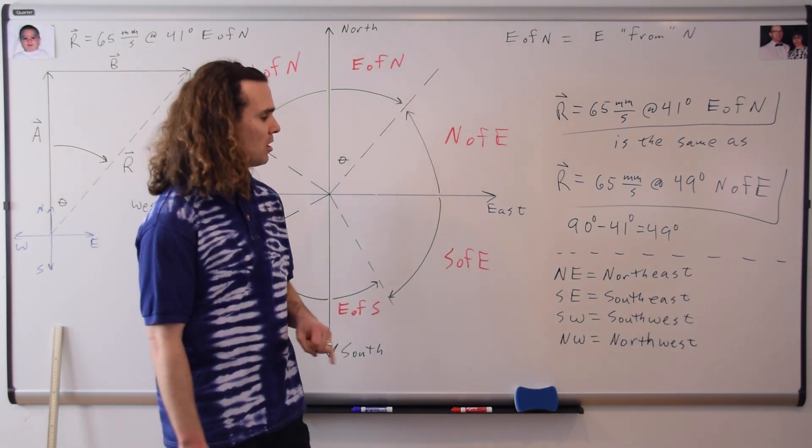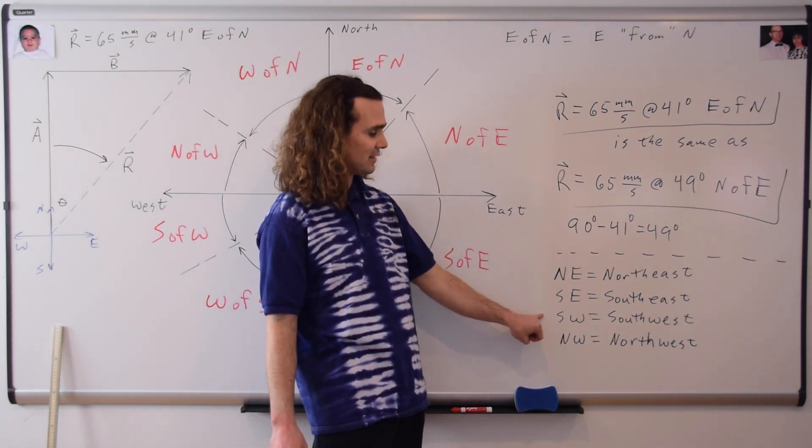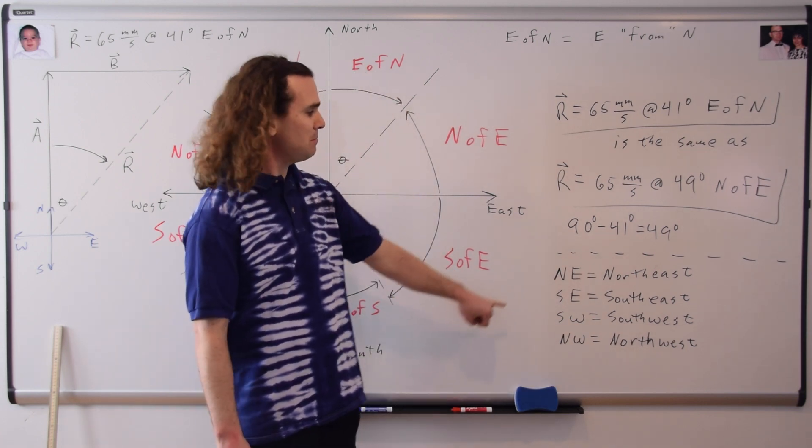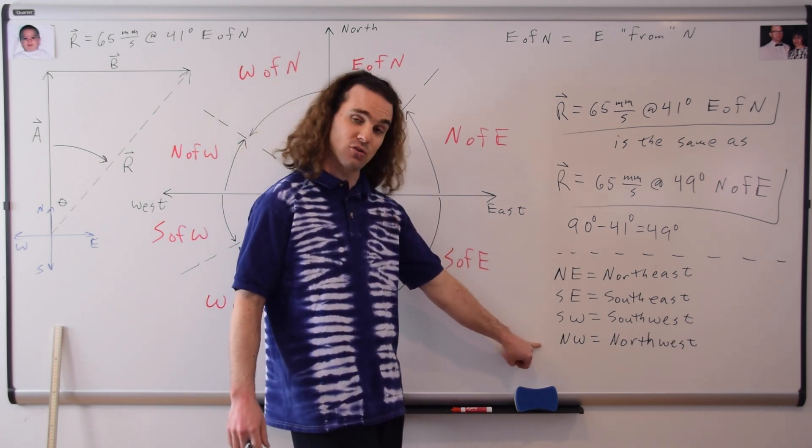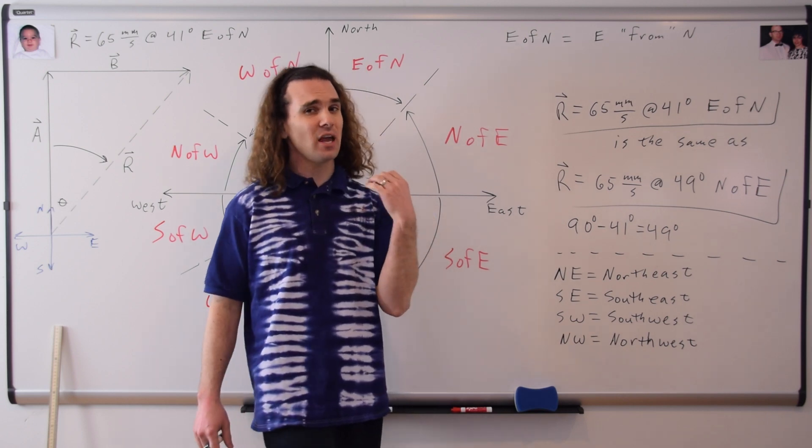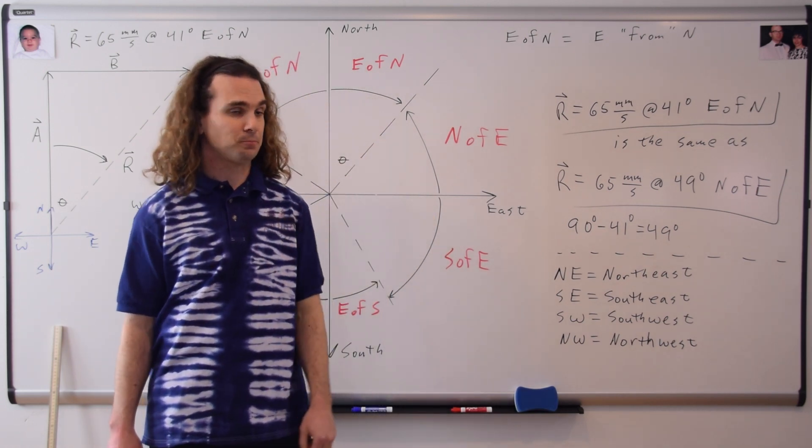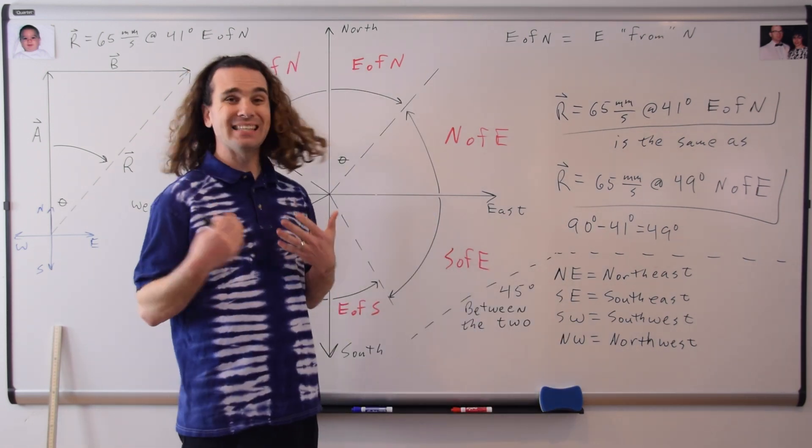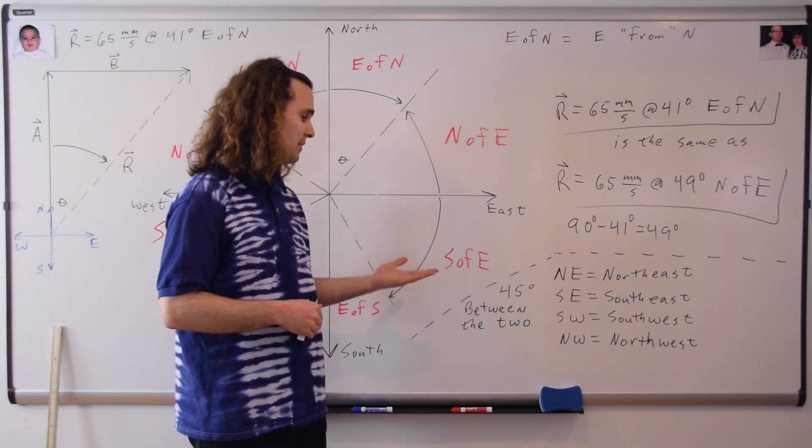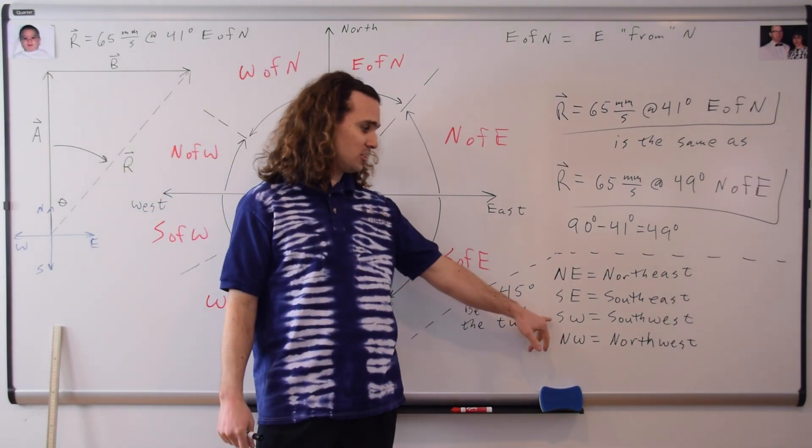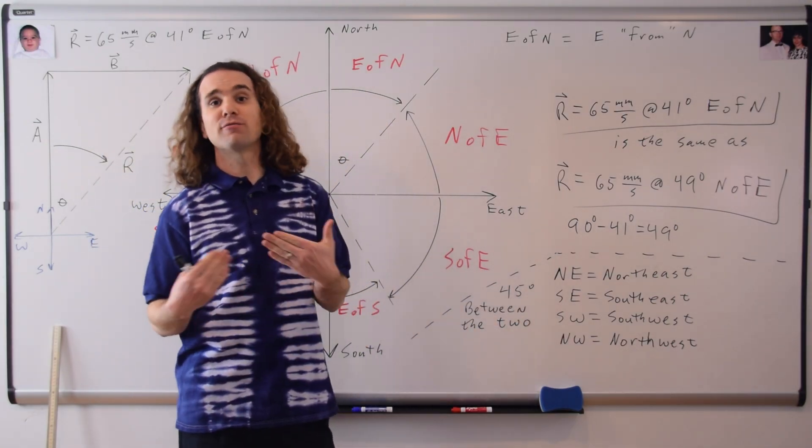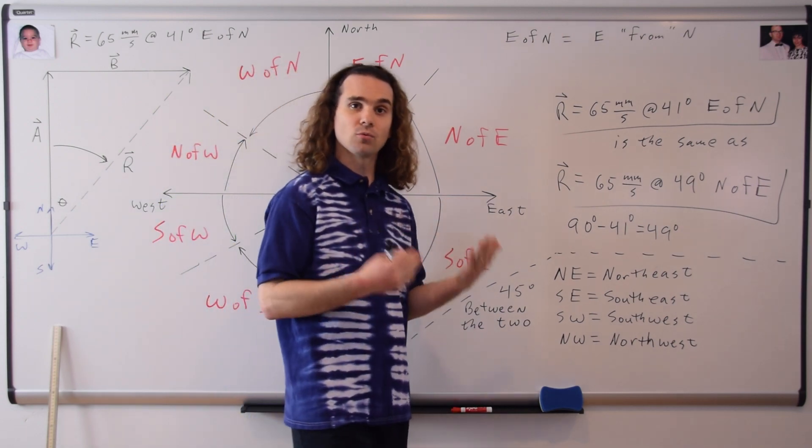One other small thing, sometimes you'll see NE, SE, SW or NW. They mean northeast, southeast, southwest, and northwest. And they mean actually a specific direction. So it means exactly 45 degrees between the two directions. So then, northeast could be 45 degrees east of north or 45 degrees north of east. Correct. But generally, people will write southwest, for example, rather than 45 degrees south of west.